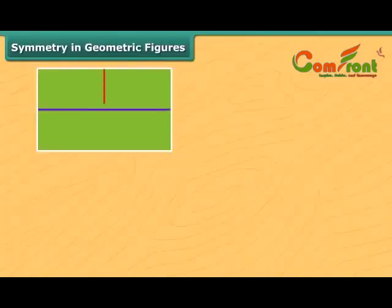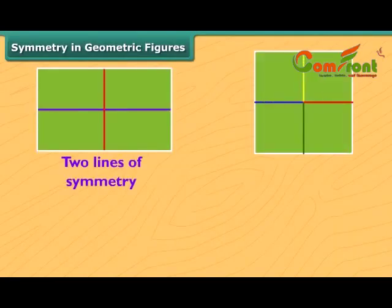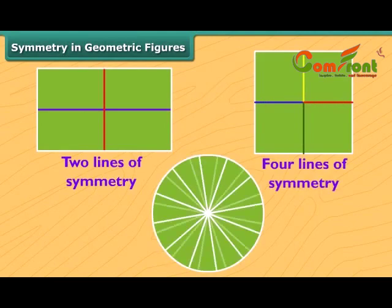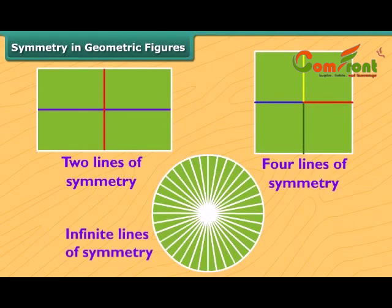Rectangles have two lines of symmetry, but a square has four. A circle has infinite lines of symmetry.